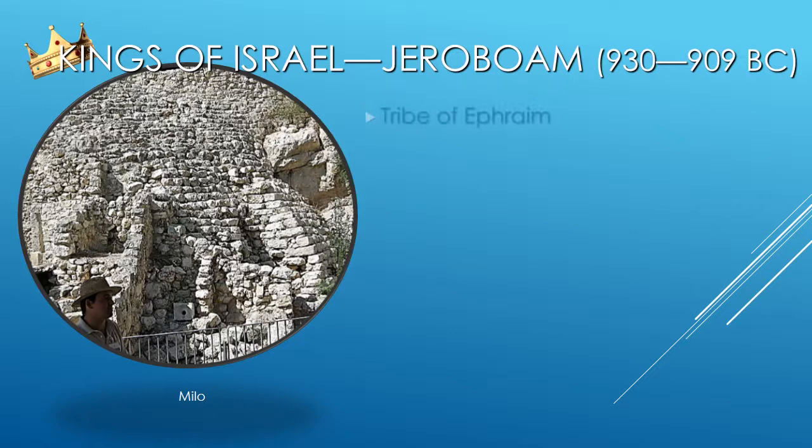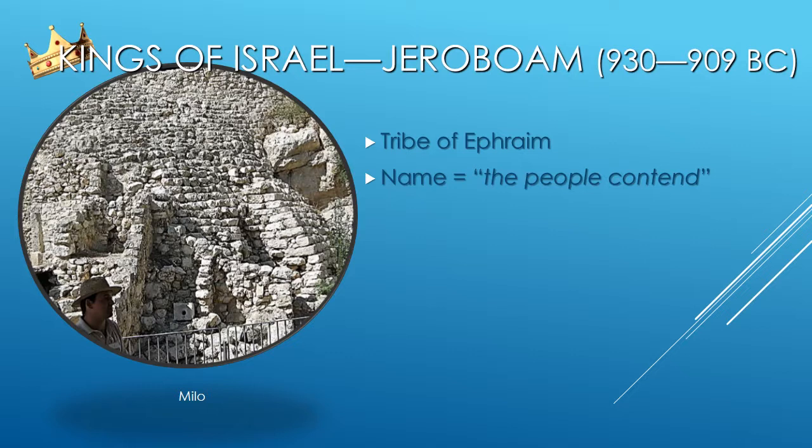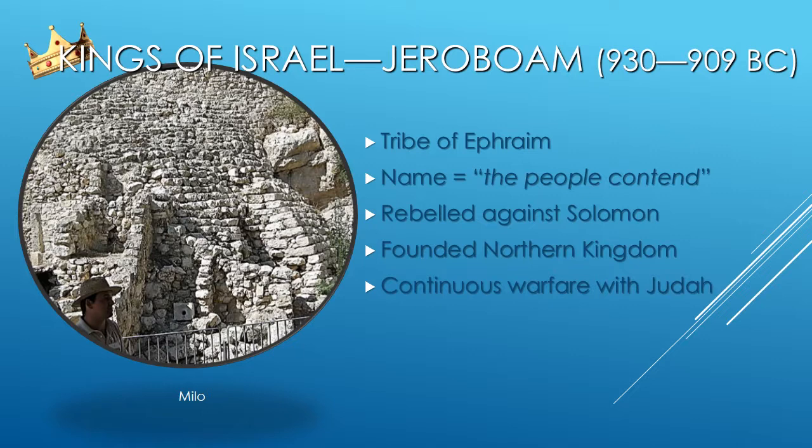In 1 Kings chapter 11, after giving us a long list of Solomon's many accomplishments, his wisdom and his wealth, the Bible tells us that Solomon amazingly turned his back on the Lord.